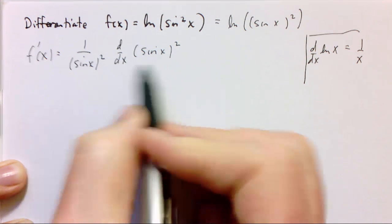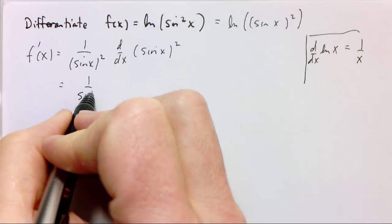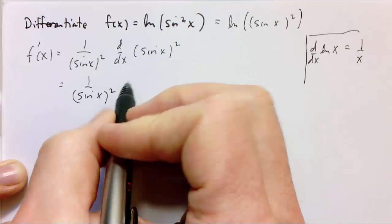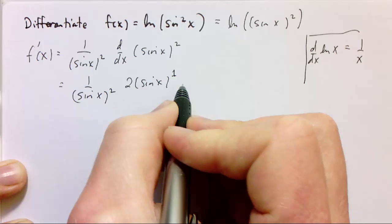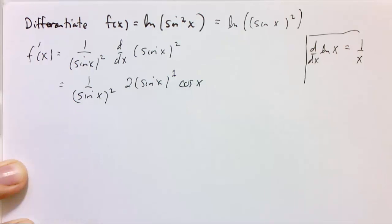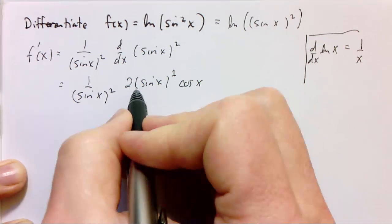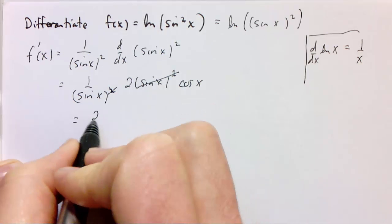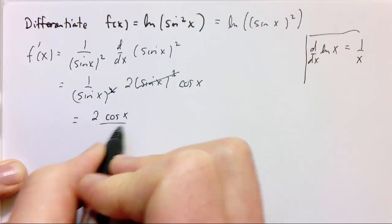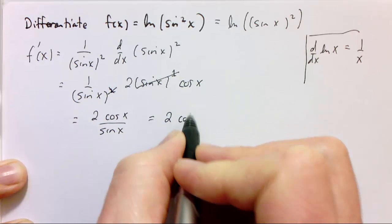How do I differentiate the inside? That's another chain rule application. I get 2 times the inside to the first power times the derivative of the inside. So here I have sine x squared in the denominator and sine x to the first, which cancel, and we get 2 cosine x over sine x, or we can rewrite that as 2 cotangent of x.